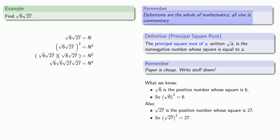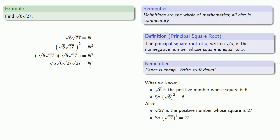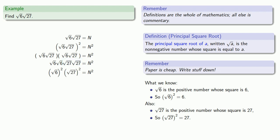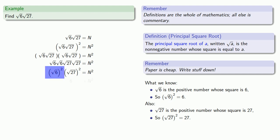But wait — definitions are the whole of mathematics, all else is commentary. When I multiply something by itself, that's the same as that thing squared. So square root of 6 times square root of 6 is square root of 6 squared. And similarly, square root of 27 times square root of 27 is square root of 27 squared. But I know something about square root of 6 squared and square root of 27 squared. Since equals means replaceable, I can replace square root of 6 squared with 6 and square root of 27 squared with 27.